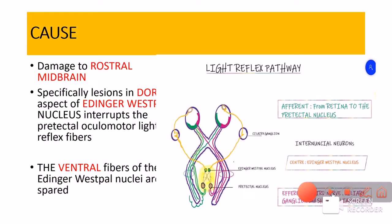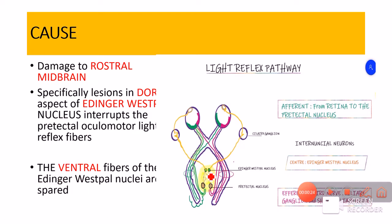In my previous video on the light reflex pathway, I told you that the afference for the light reflex starts from the retina and goes up to the pretectal nucleus, and the efference starts from the Edinger-Westphal nucleus and goes up to the short ciliary nerve, which will go and supply the sphincter pupillae. The interconnection between the afferent and efferent pathway is actually the internuntial neurons. The internuntial neurons are shown in red ink that I'm drawing, and we can see that the pretectal nucleus is actually sending the impulses to both the Edinger-Westphal nuclei.